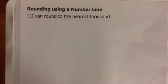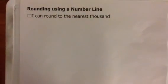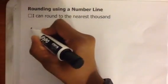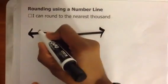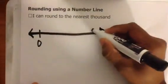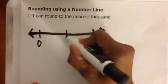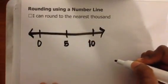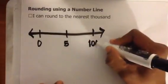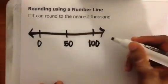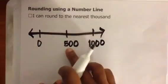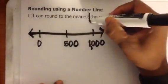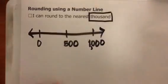Rounding using a number line. I can round to the nearest thousand. You already know something that's going to help you round to the nearest thousand using a number line. You know that halfway between 0 and 10 is 5, halfway between 0 and 100 is 50, and halfway between 0 and 1,000 is 500. Remember that halfway between 0 and 1,000 is 500.